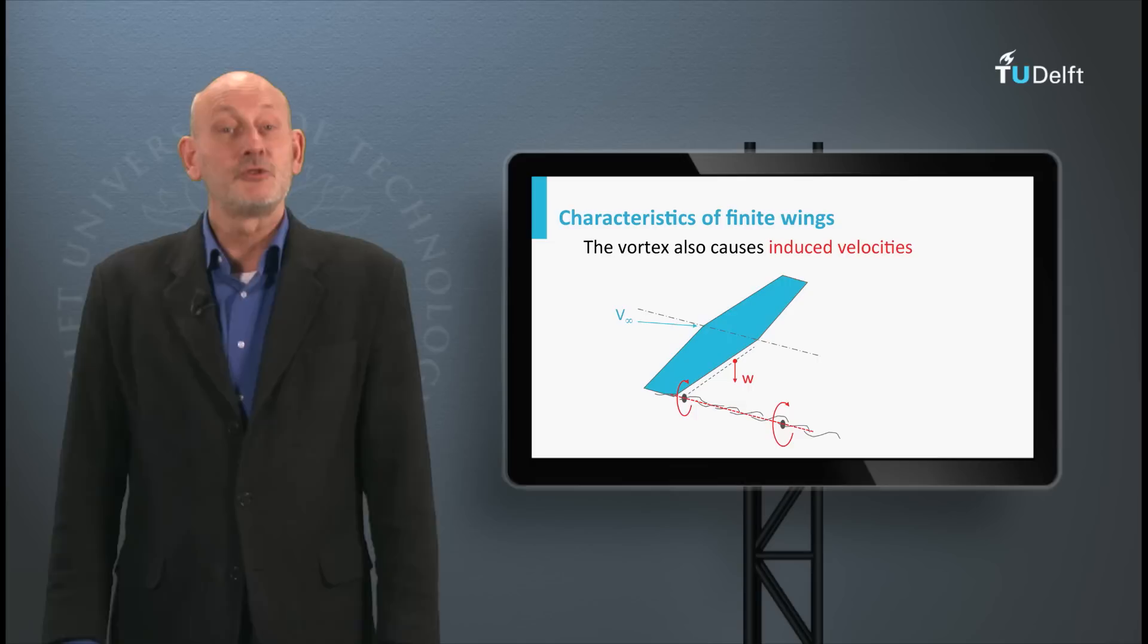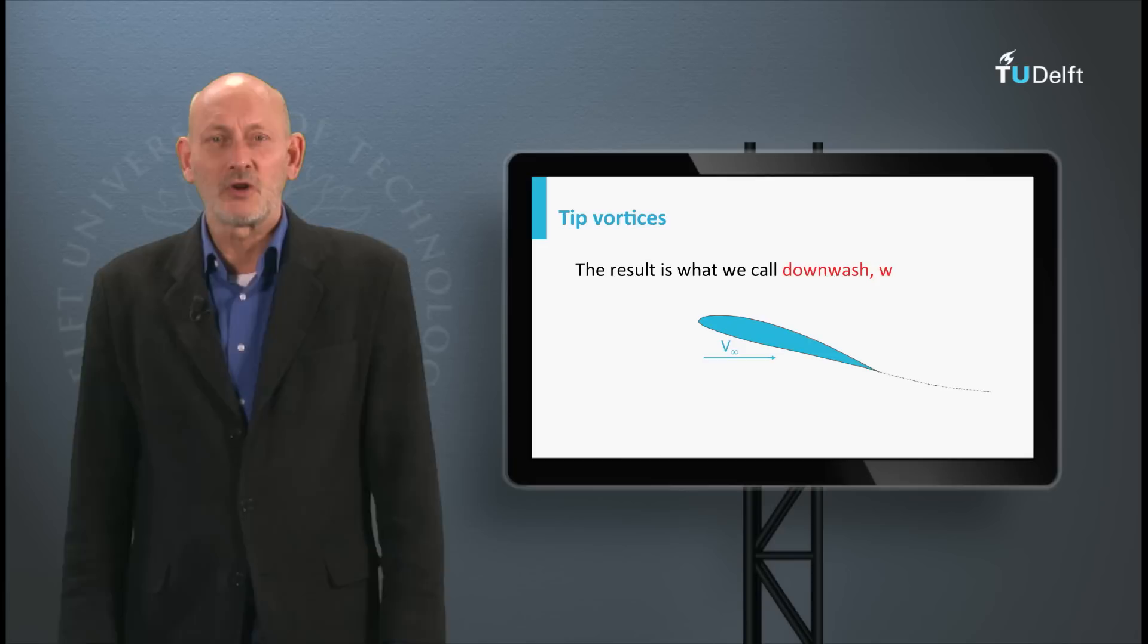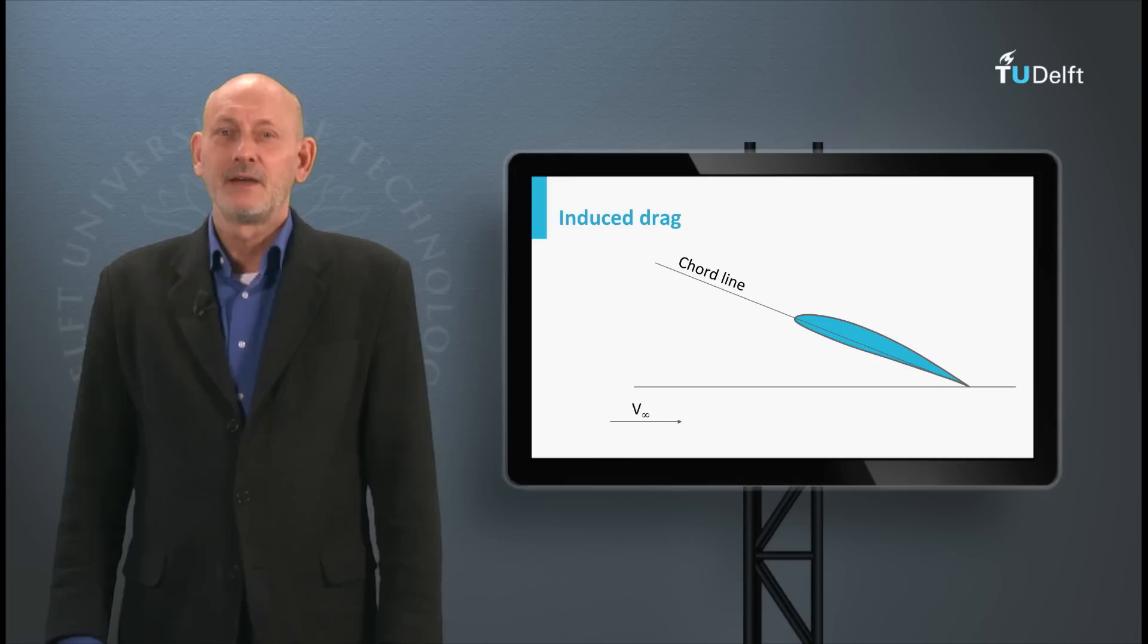The vortices from the tips also result in induced velocities pointing downwards along the entire wingspan. This is what we call downwash. The effect of this downwash is that locally at the wing the velocity vector deviates from the free stream direction.